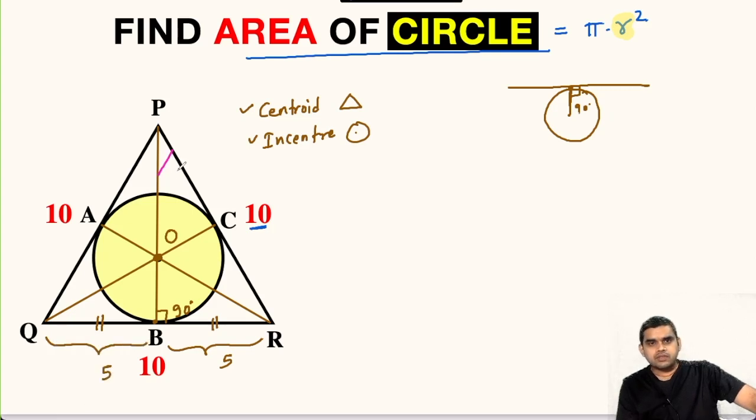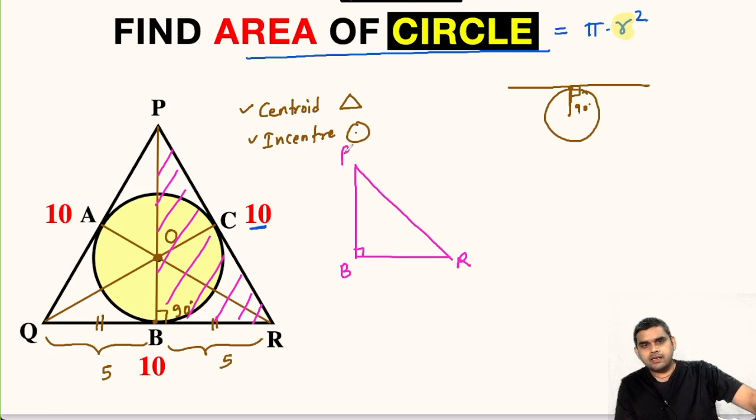Now let us focus on this triangle PBR. Let me draw it outside. So this is point B, R and P. BR is 5 units, PR is 10 units and PB is unknown to us.